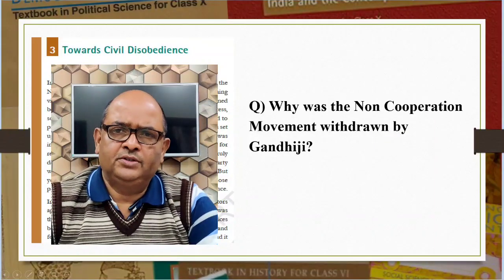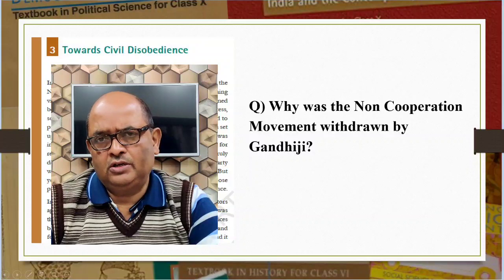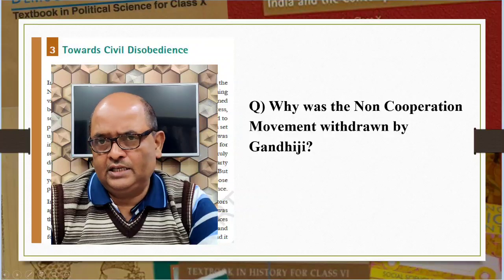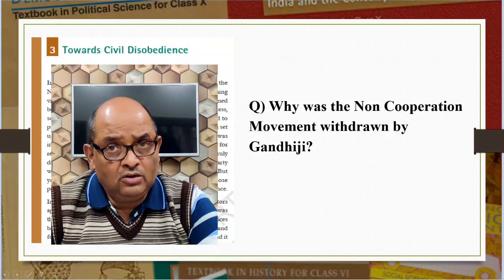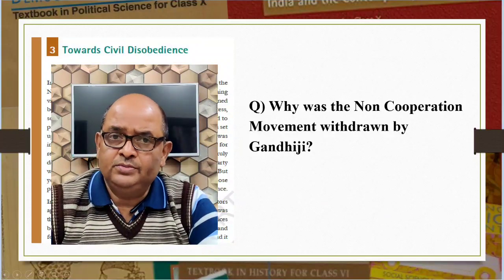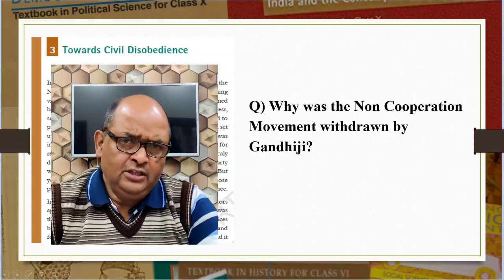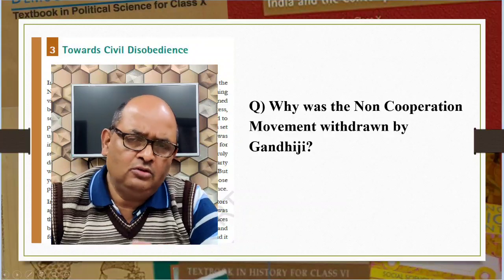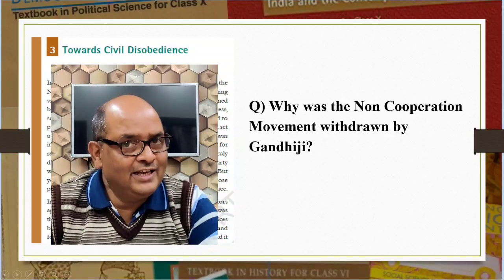Why was the non-cooperation movement withdrawn by Gandhiji? The movement was turning violent. At Chauri Chaura in Gorakhpur, a peaceful demonstration in a bazaar turned into a violent clash with the police, in which more than 20 policemen were killed. Gandhiji also felt that the Satyagrahis needed to be trained properly before they would be ready for mass struggle. Within the Congress also, certain leaders were tired of mass struggles and wanted to participate in elections to the provincial councils, which were set up under the Government of India Act, 1919.